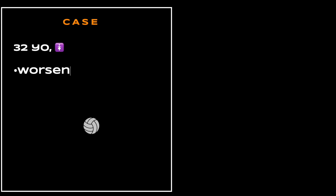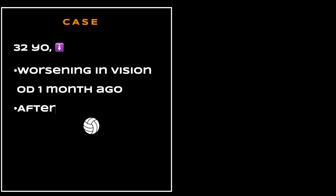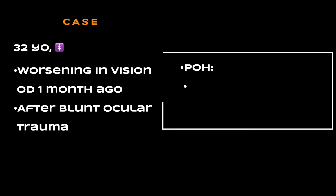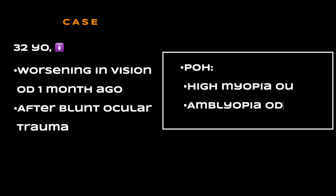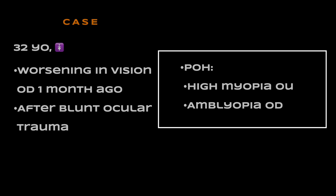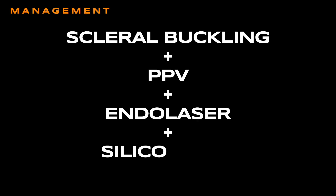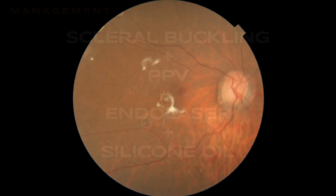In this video, we present the case of a 32-year-old female volleyball player with worsening vision in her right eye, about one month after blunt ocular trauma with a ball. The patient had a history of high myopia in both eyes and amblyopia in the affected eye. Initial visual acuity was hand motion in the right eye, and fundoscopy showed total retinal detachment with a large inferior tear. The initial approach was scleral buckling combined with pars plana vitrectomy, endolaser, and silicone oil implantation.